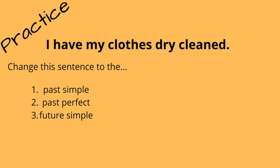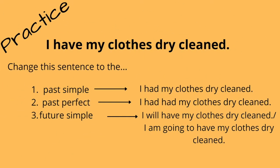Let's do another one. Take the sentence: I have my clothes dry cleaned. Let's change it into the past simple, the past perfect, and the future simple. Past simple: I had my clothes dry cleaned. Past perfect: I had had my clothes dry cleaned. And for the future simple: I will have my clothes dry cleaned, or I am going to have my clothes dry cleaned. Essentially, have is treated as if it were a main verb.